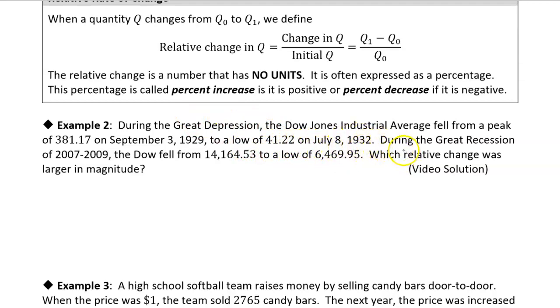And we're going to compare that to the Great Recession, which was from 2007 to 2009. And over that interval, the Dow fell from 14,164.53 to a low of 6,469.95. All right, so we want to look at which relative change was larger.